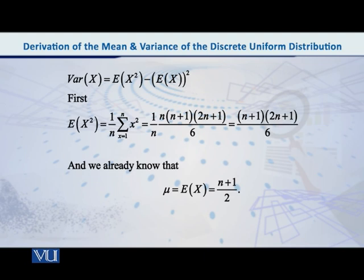What do we get? Summation x square into 1 over n. Now this 1 over n since it's constant, we take it outside. So what do we get? 1 over n summation x square.